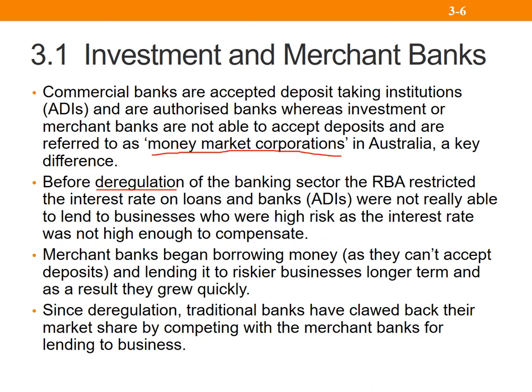Before deregulation of the banking sector, the Reserve Bank of Australia restricted the interest rate on loans, and these authorized deposit institutions — commercial banks — were not really able to lend to high-risk businesses because the interest rate didn't compensate them for that risk. So merchant banks began to borrow money from the financial markets and lend it to riskier businesses longer-term, causing them to grow quickly. However, since deregulation, commercial banks have clawed back their market share by competing with merchant banks for lending.